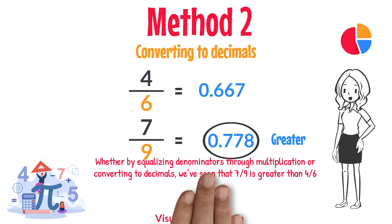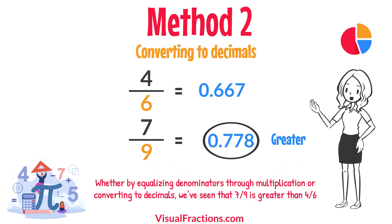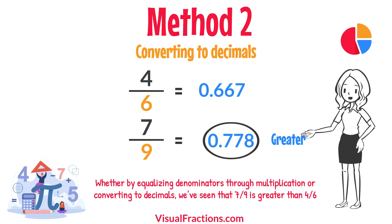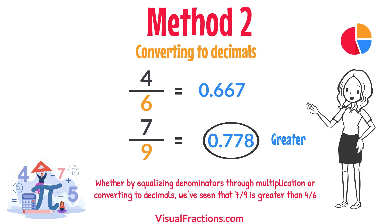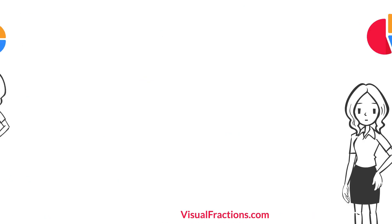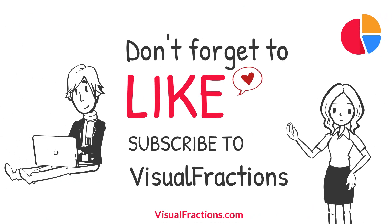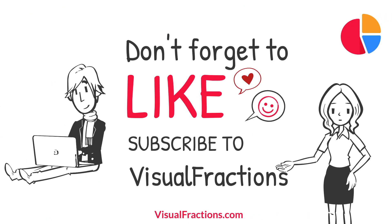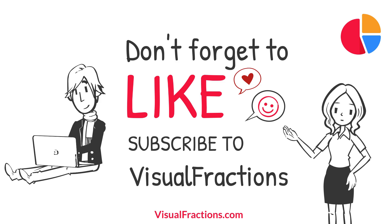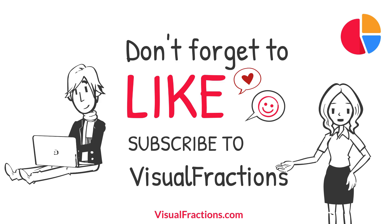And there you have it. Whether by equalizing denominators through multiplication or converting to decimals, we've seen that 7 ninths is greater than 4 sixths. If you found this tutorial helpful, go ahead and smash that like button and don't forget to subscribe to Visual Fractions. Thanks for watching.